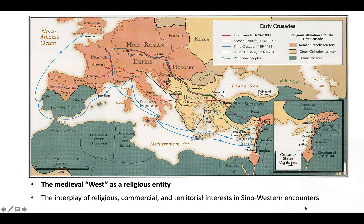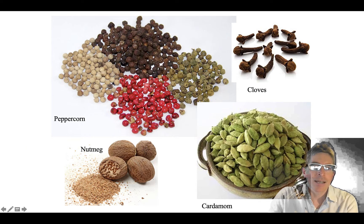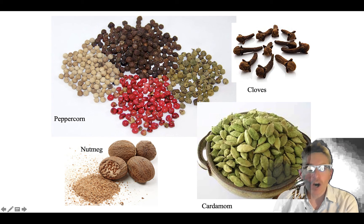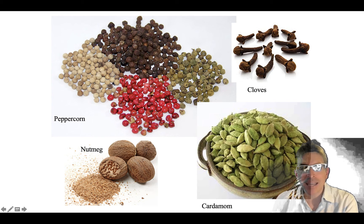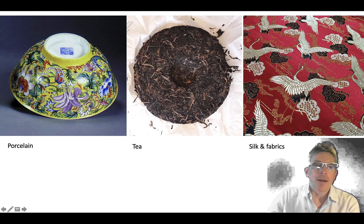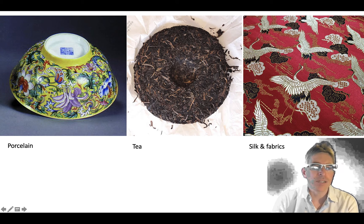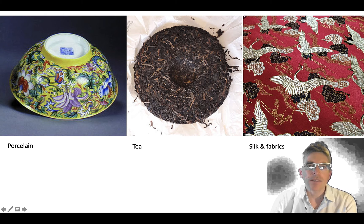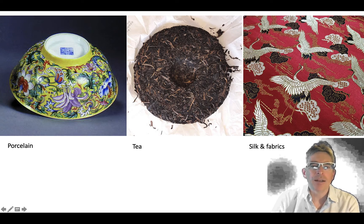The interplay of religion, commercial trade, and territorial interests have a huge impact on Sino-Western encounters. One big impetus for trade that Europeans conducted with non-European peoples was for products in high demand in Europe. Not all came from China — some came from South Asia: peppercorn, nutmeg, cloves, cardamom. But later, certain products did come from China: porcelain, tea, silk, and fabrics. This is something Mungelo discusses in his article and something that would have a huge impact on Sino-Western relations.